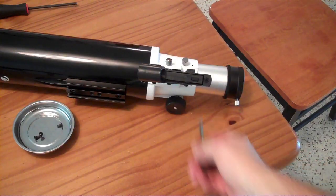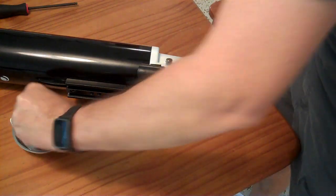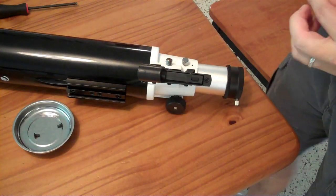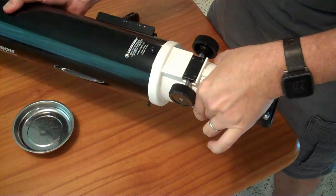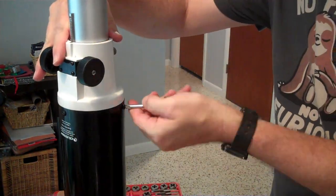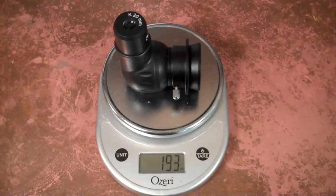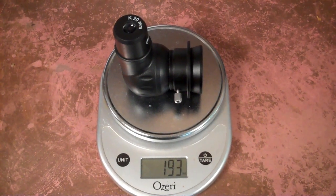I line my focuser assembly back up with the Vixen mount the way I want it. And now I just have to put these three screws back in. The star diagonal and eyepiece is 193 grams.